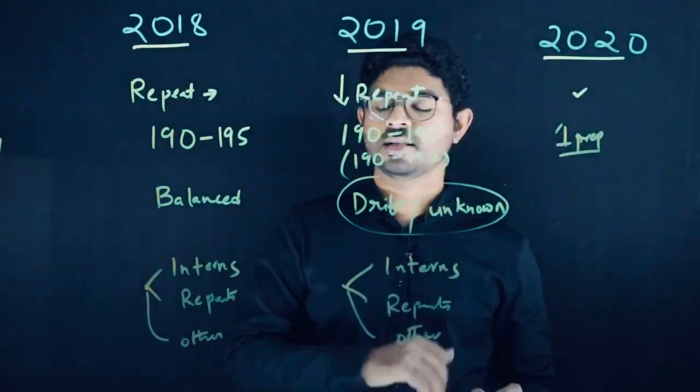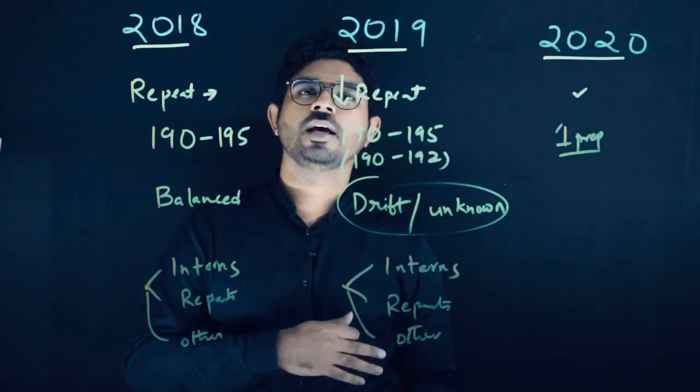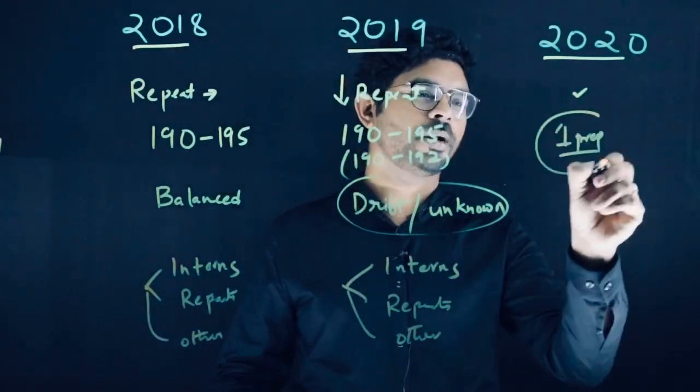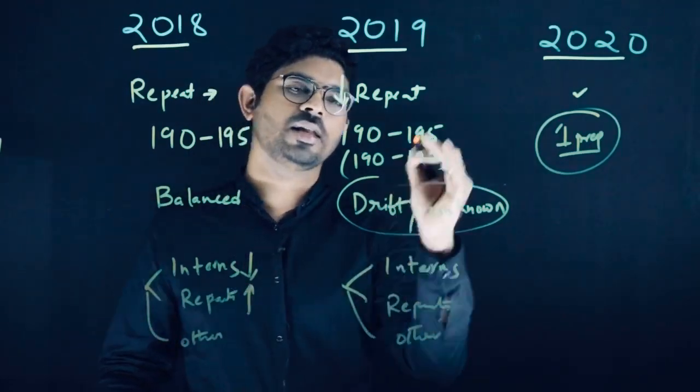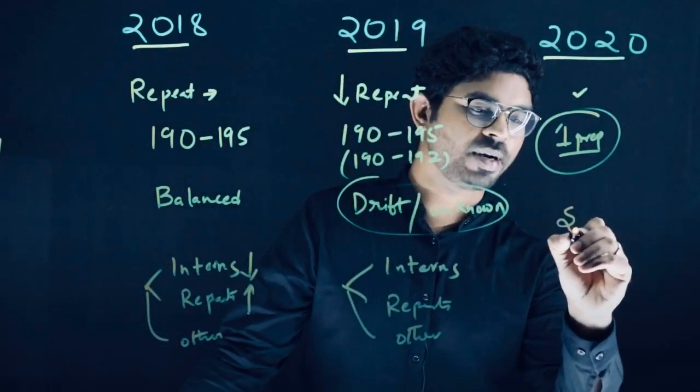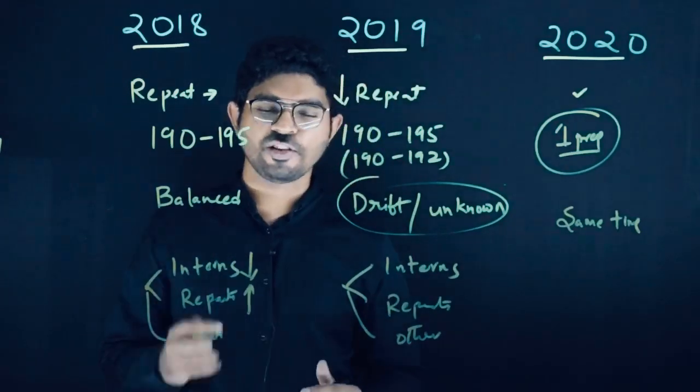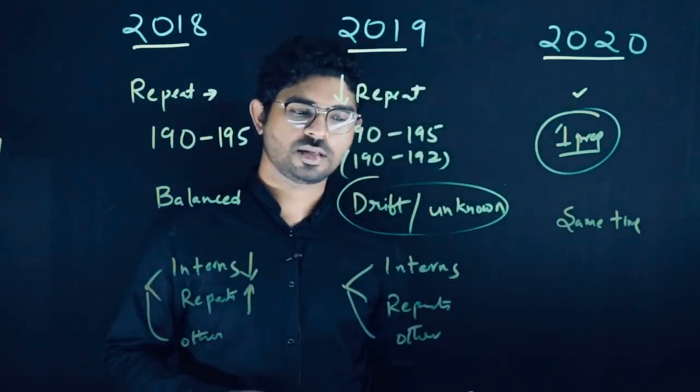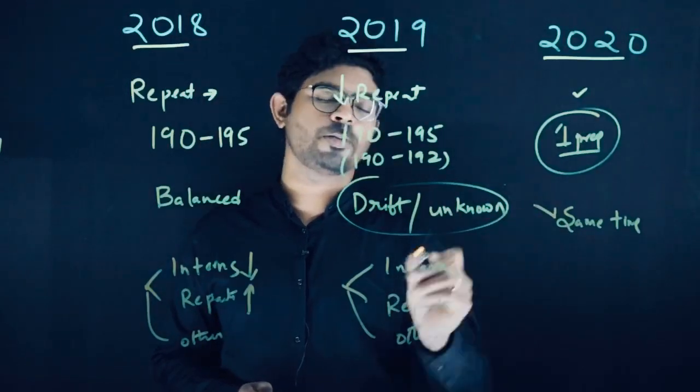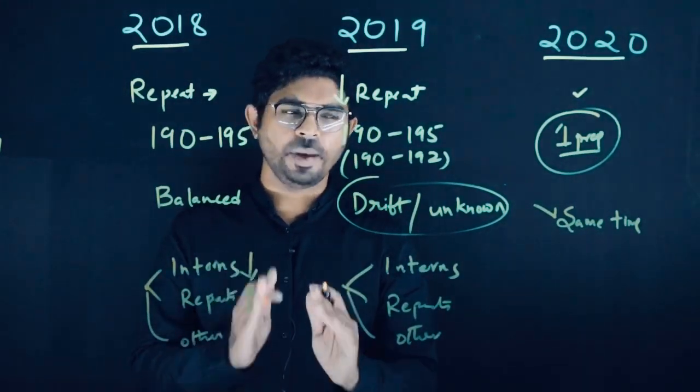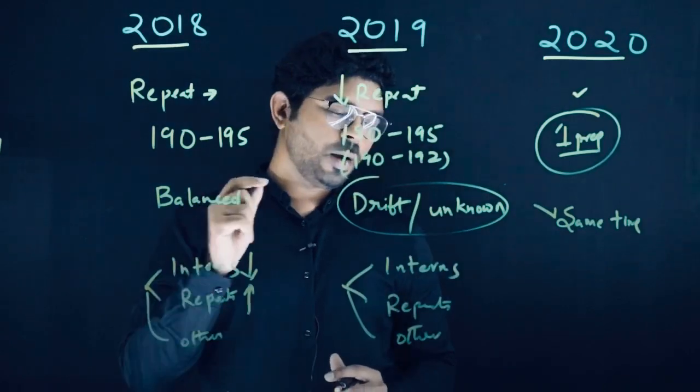If you come to the present COVID-19 era, there is only one preparation for all—interns, yes you are COVID affected; repeaters, yes you are COVID affected; housewives, working women, people who have clinics—there is only one preparation. Maybe interns will have less time, repeaters will have more time in the last two years, but now everyone has the same time. Even if you're a clinician, your clinics are closed. Even if you're an intern, your colleges are closed. The mode of preparation or time allocated is the same.